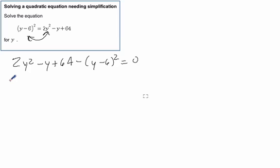That's going to be 2y squared minus y plus 64. And then it's going to be a minus y squared. And then that's going to be a minus 12y minus a minus 12y. So it's going to be plus 12y and then minus 36.